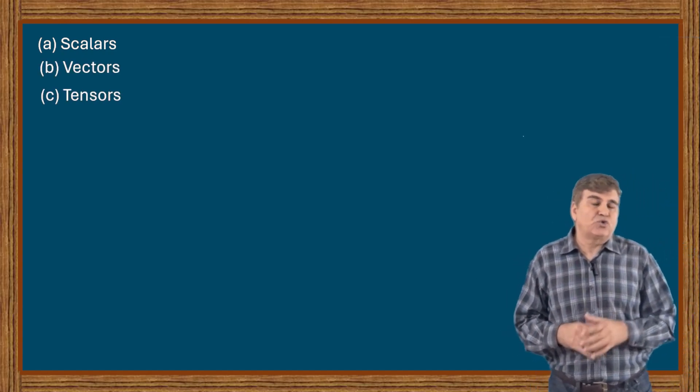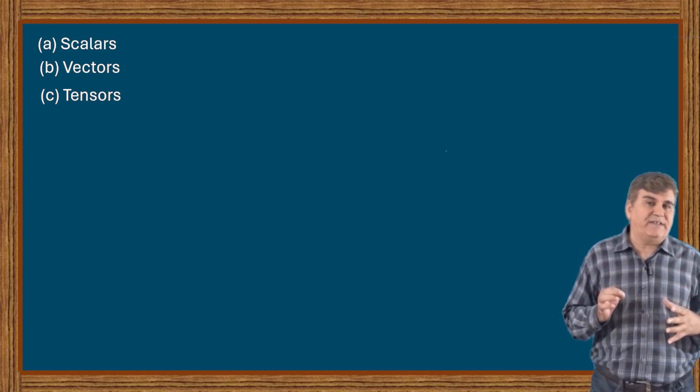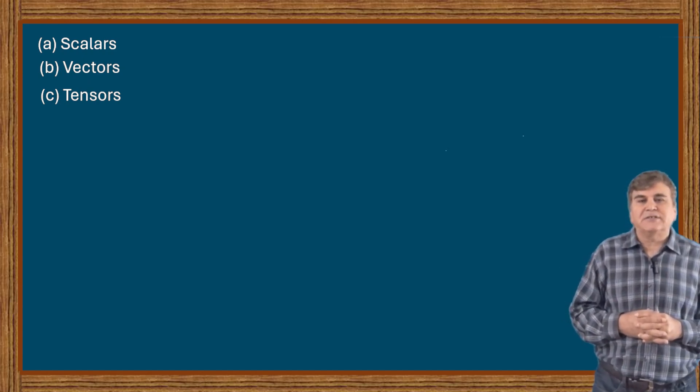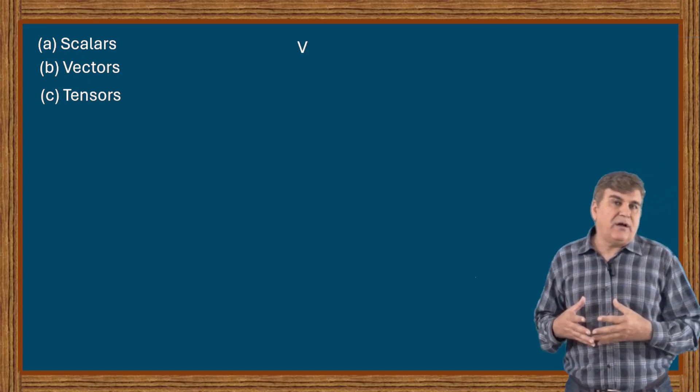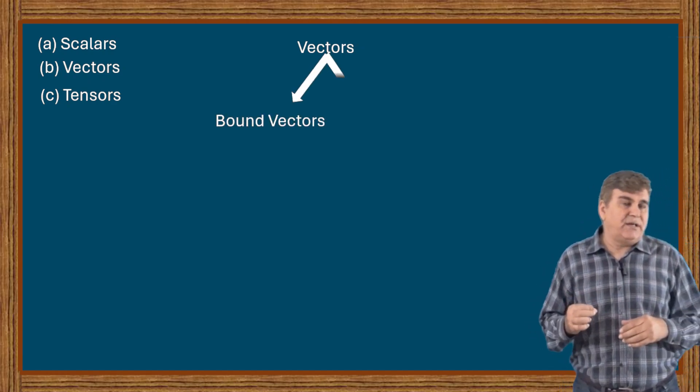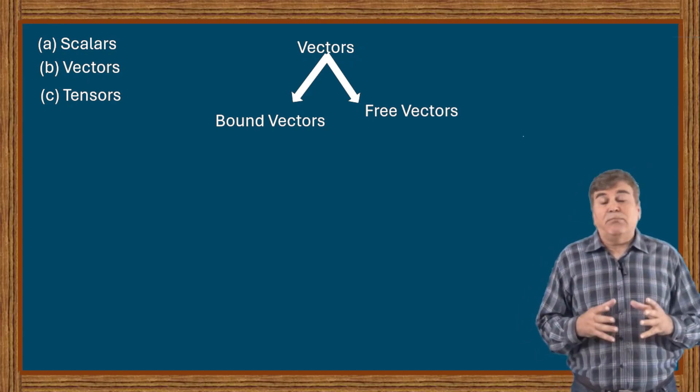So we deal with three different types of quantities in physics. Now let's go back to the types of vectors. One category of vectors is called bound vectors and the other category of vectors is called free vectors.